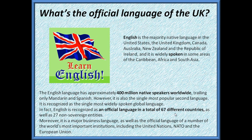What is the official language of the UK? English is spoken in the United States, United Kingdom, Canada, Australia, New Zealand, the Republic of Ireland, and in some areas of the Caribbean, Africa, and South Asia. English has approximately 400 million native speakers worldwide. It is the official language in 67 different countries, and it is the official language of some important institutions such as the United Nations and the European Union.